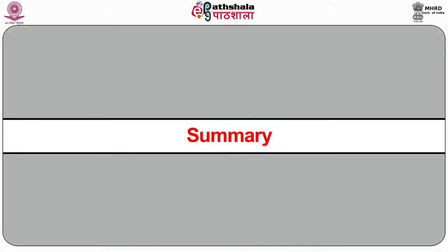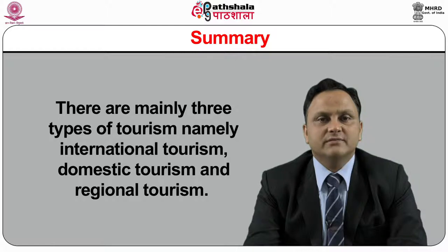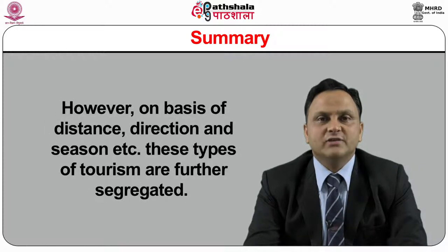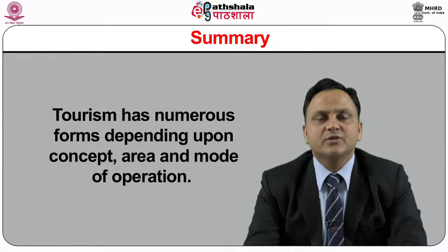Dear learners, let's summarize this module. In this module, you have learned about different types and forms of tourism. This module has provided information about the concept of tourism product and various types of tourism products. There are mainly three types of tourism: international tourism, domestic tourism, and regional tourism. However, on the basis of distance, direction, and season, these types are further segregated. Tourism has numerous forms depending upon concept, area and mode of operation. Tourism products are broadly a bundle of goods and services. Types, forms of tourism, and types of tourism products also help in identification of tourism activity at any tourist destination. Thank you.